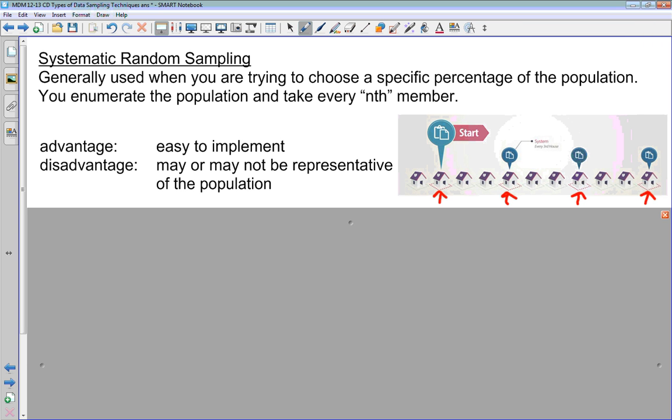This is very similar to simple random. Again, it's easy to implement. Again, the disadvantage may or may not be representative of the population.